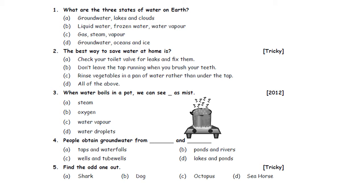Question one: What are the three states of water on earth? A. Groundwater, lakes and clouds. B. Liquid water, frozen water, water vapor. C. Gas, steam, vapor. D. Groundwater, oceans and ice. The three states of water on earth are solid (frozen water), liquid (normal water form), and gas (steam or water vapor). So option B — liquid water, frozen water, water vapor — is the correct answer.